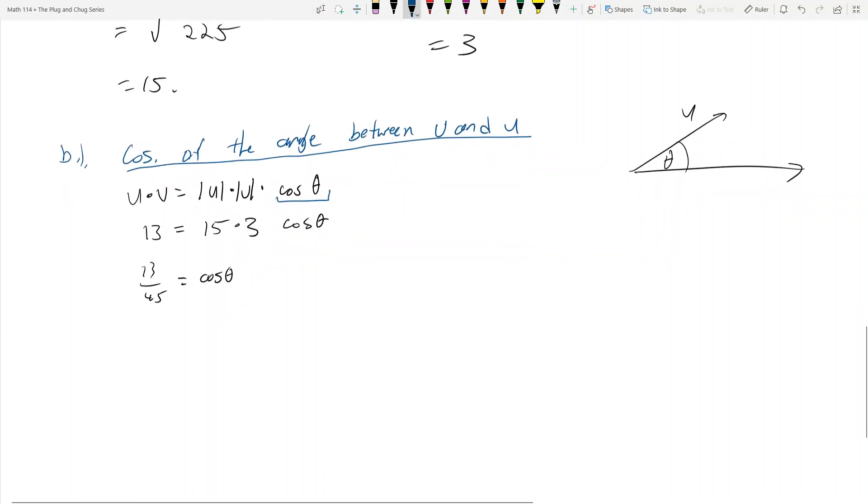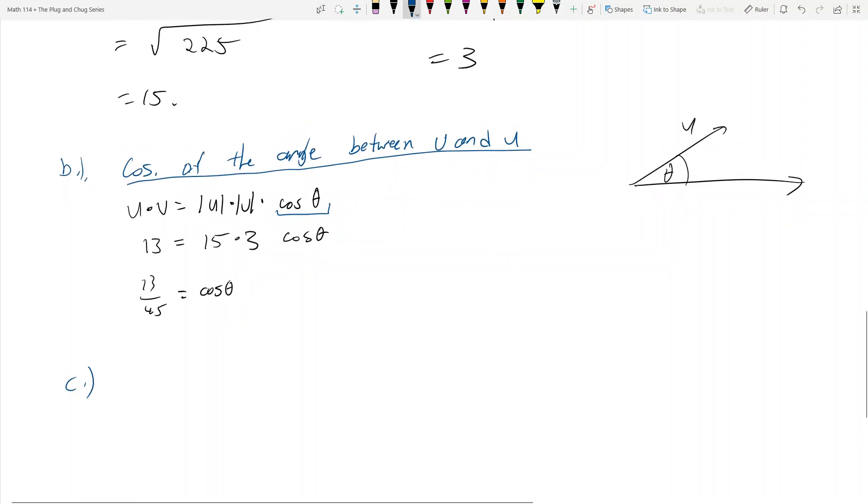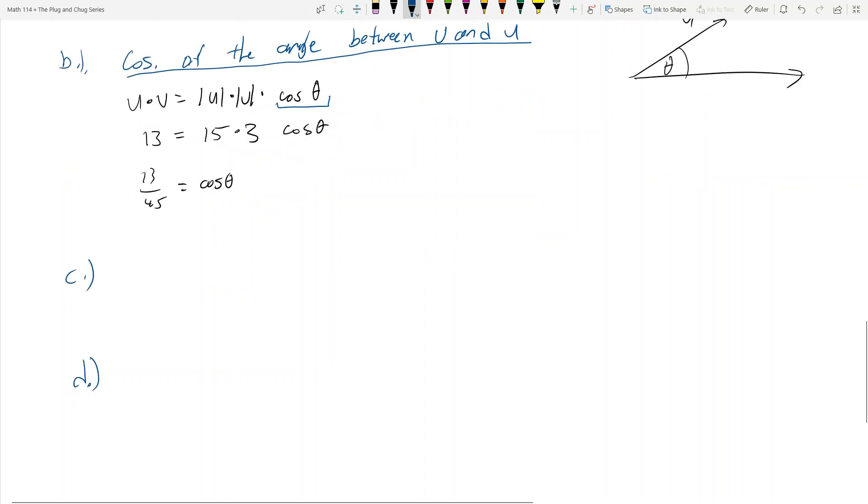Part C asks you to find the scalar component of u in the direction of v. Let's skip that. Let's go to D. And we'll see why we skipped C in a second here.